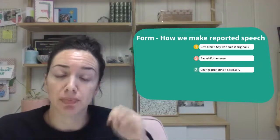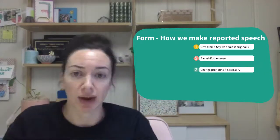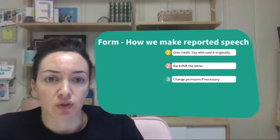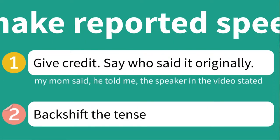There are three steps to making something reported speech rather than direct. First, give credit — you have to say who said it originally. This might look like 'my mom said,' 'he told me,' 'the speaker in the video stated,' or 'this author explains.' These are all ways to give credit, or to say who said it originally.